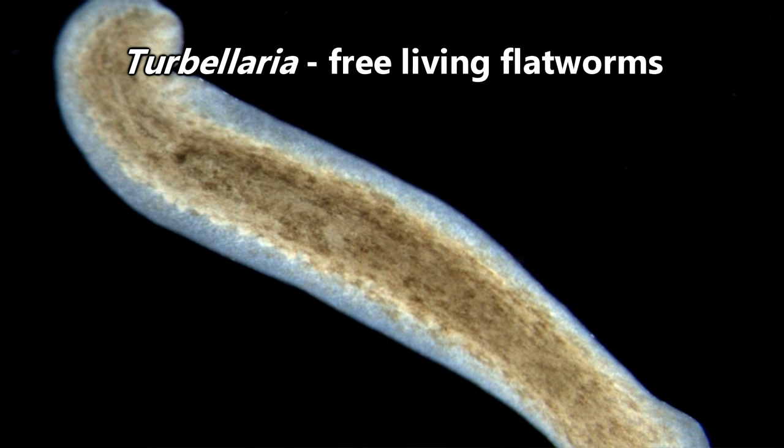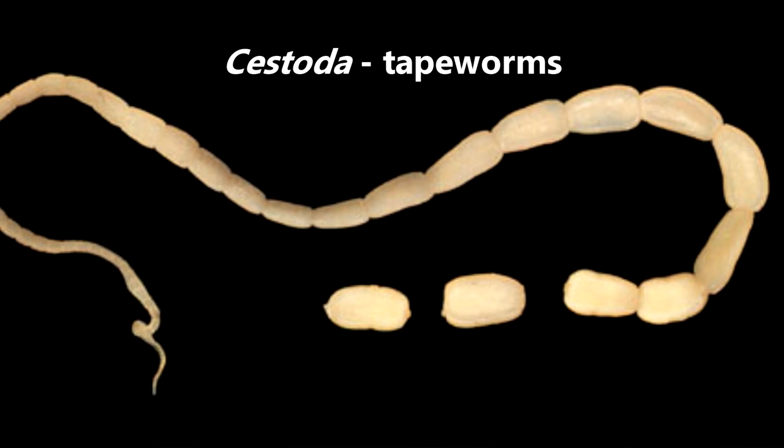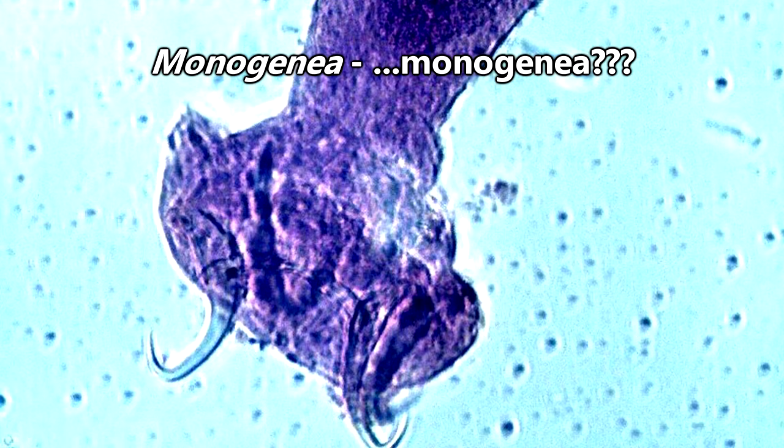Turbellaria are considered the free-living flatworms, which we'll explain later. Cestoda are usually called tapeworms, Trematoda are flukeworms, and Monogenea — well, they're just Monogenea.